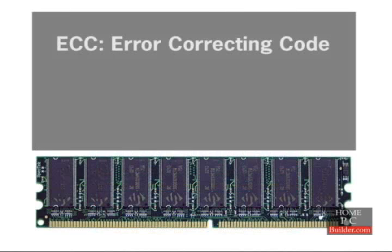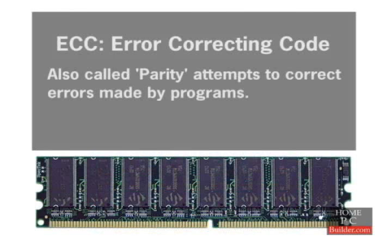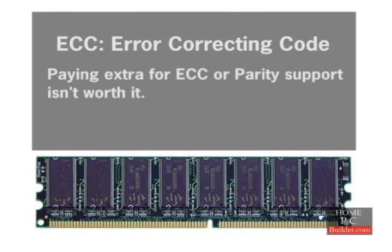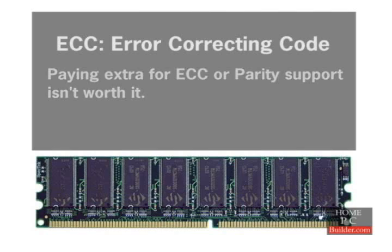Most memory comes with the option of ECC, or error correcting code, also known as parity. This type of memory attempts to fix any errors made by the program being run. Since modern RAM doesn't make many mistakes, and ECC almost never is able to correct errors that do happen, the extra money for ECC isn't worth it. Look for RAM without ECC or parity support.